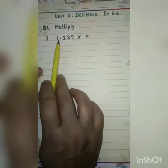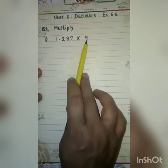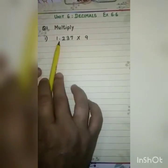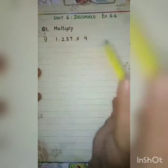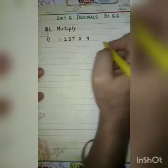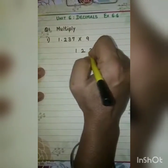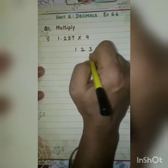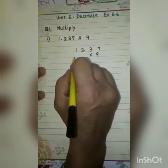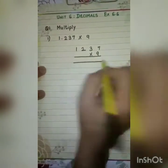Here you can see I have written a decimal number multiplied with a whole number: 1.237 × 9. Always keep in mind, whenever we are multiplying any decimal number with a whole number, you have to multiply them as normal numbers.